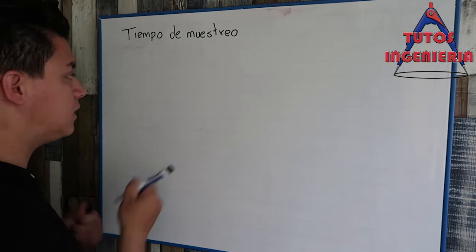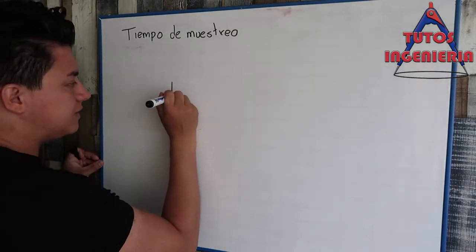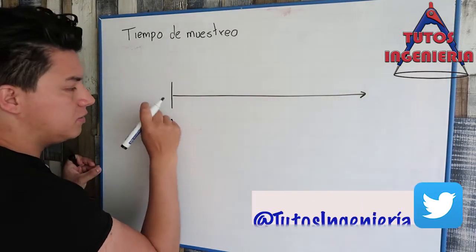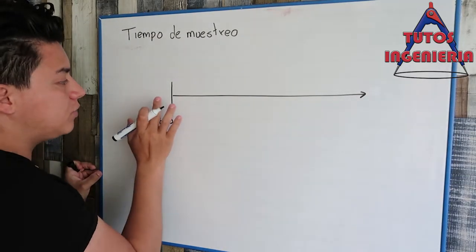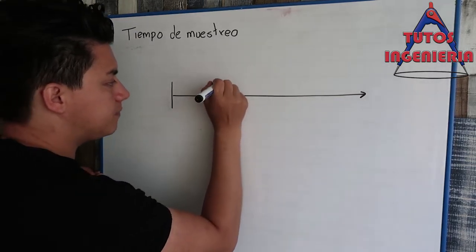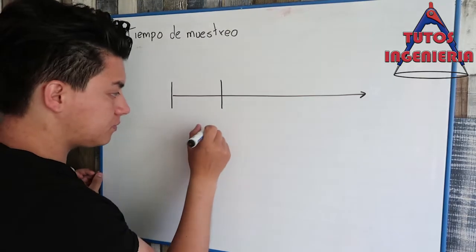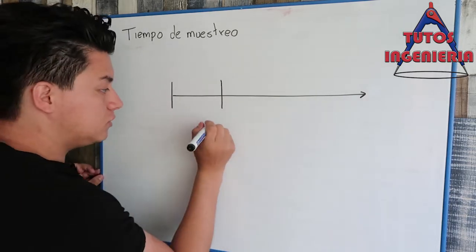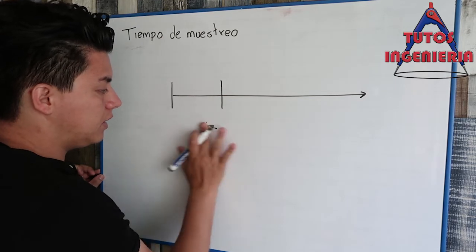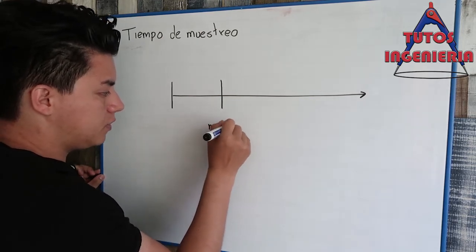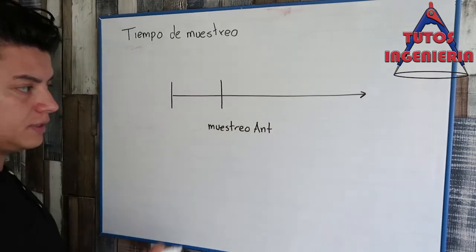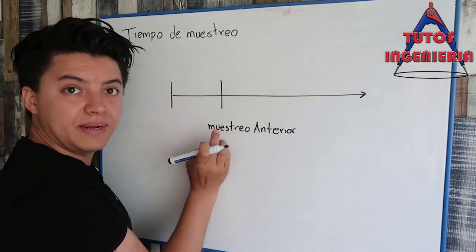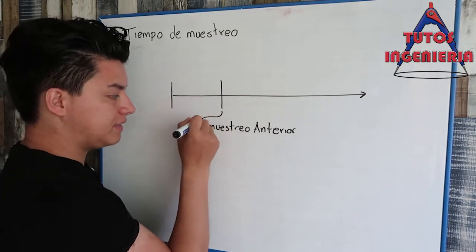In this part of the video we are going to explain some concepts that are so important to help us program this on our Arduino. Imagine that the origin line is the time running on our Arduino. The first vertical line you see in the image is when we turn on our Arduino, and the second one is the time when we want to save that time in a variable. That variable is called 'muestreo anterior' — that is the name we give to the time taken from our Arduino.